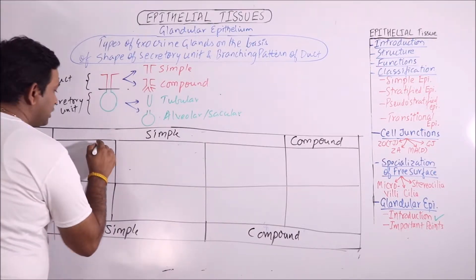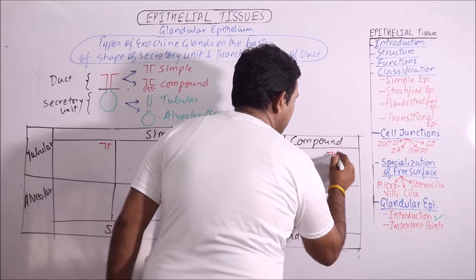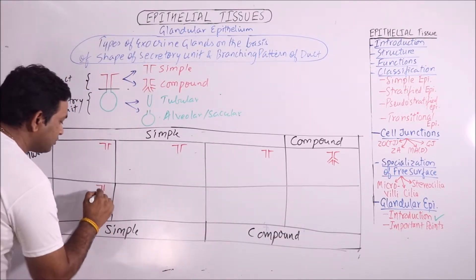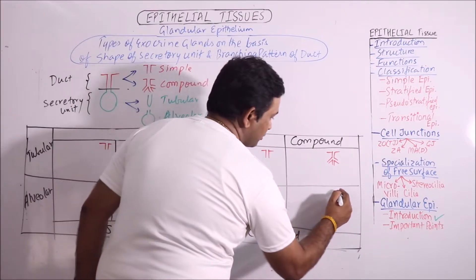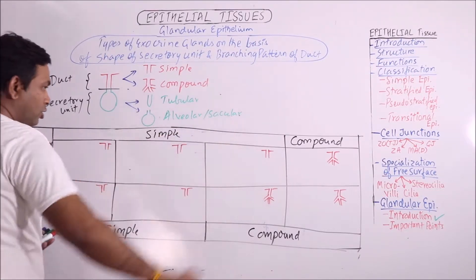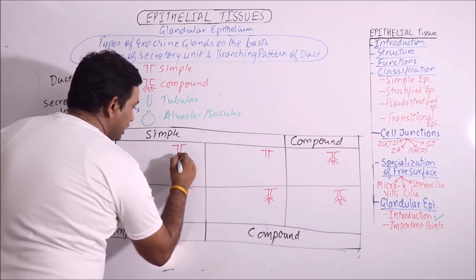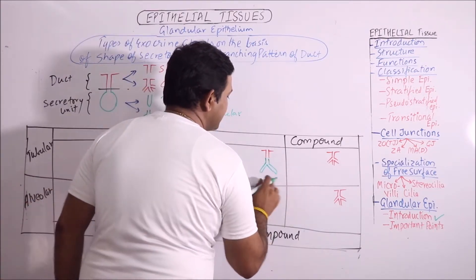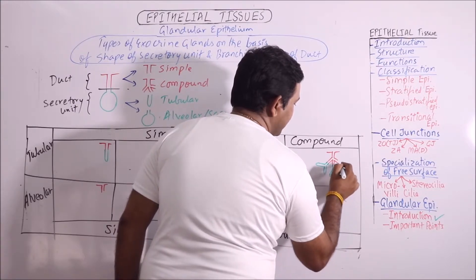Now we will draw the classification. As the duct system is simple for these, it should be like this, and if compound duct system is there, it should be like this. For these the duct system is simple and for these the duct system is compound. Now the secretory units will be drawn — all four tubular secretory units, another type can be a branched secretory unit, and compound is understood to always have branched type secretory units.